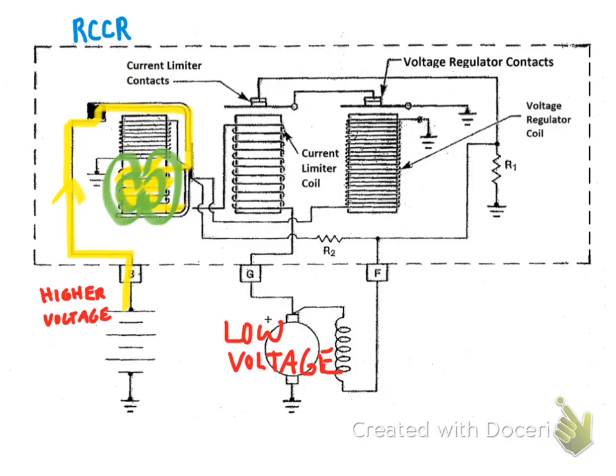So if the current's going backwards through that bottom coil, the north and south flip, and it will now allow that spring to open the points. Because it's not pulling the points down, it'll open it, and therefore there will be no current flowing back from the battery to ground through the generator. Any questions on that system?